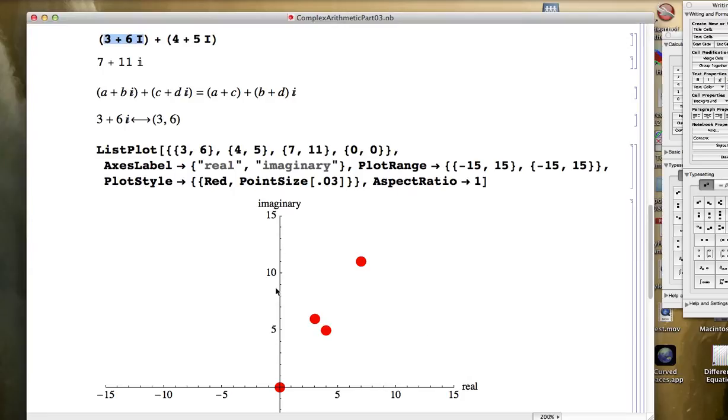This is called the complex plane, and we imagine these dots as representing those complex numbers in this complex plane. So what we have here, for example, is this dot, whose coordinates are 3, 6, represents the complex number 3 plus 6i.